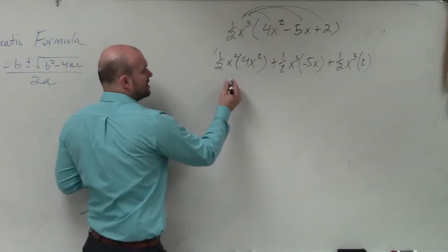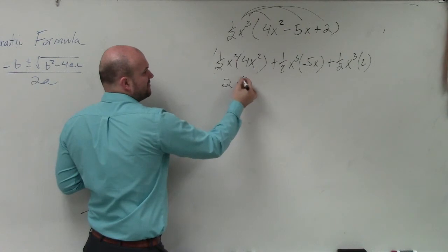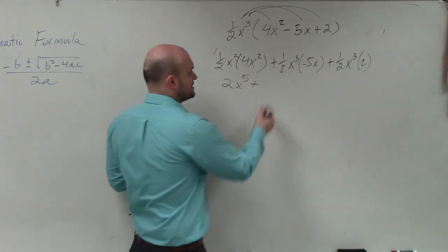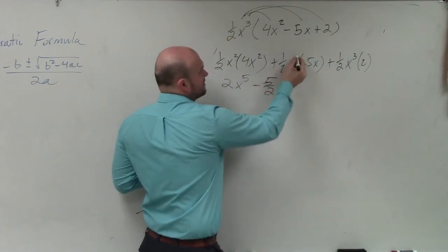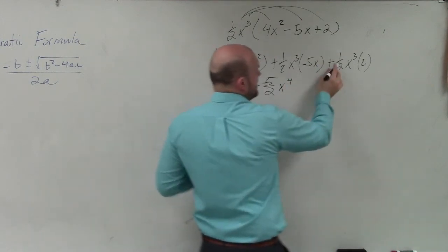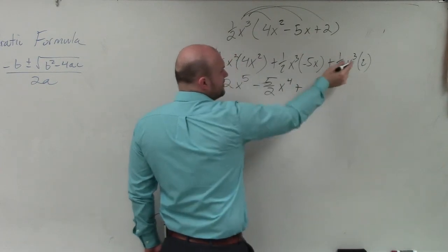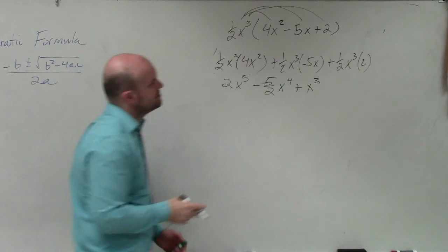So 1/2 times 4 is 2. x³ times x² is x to the fifth. Plus 1/2 times negative 5, we're just going to leave as a negative 5 halves. x³ times x to the first is x to the fourth. And then 1/2 times 2 is going to be a positive 1, and 1 times x³ is just x³. So that would be your final answer.